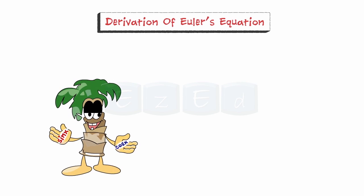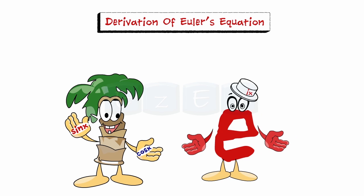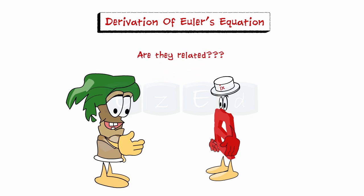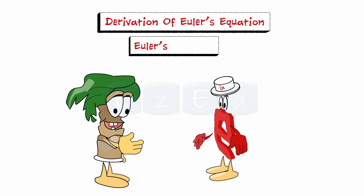We are the trigonometric functions sine and cosine. I am the complex exponential function. Are they related? They are related by a fabulous equation called Euler's equation.